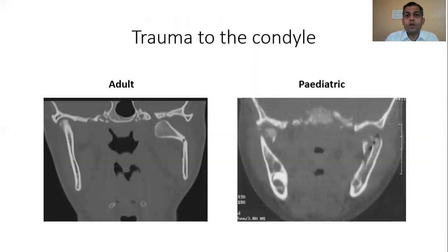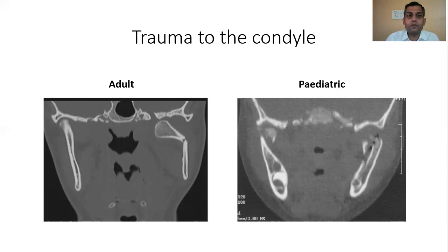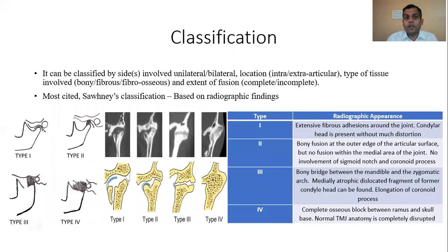As depicted in Rowe and Williams' Maxillofacial Injuries, in a child aged 2 to 5 there is thin cortex and the periosteum is in an active osteogenic phase. Following trauma there is intracapsular hemarthrosis and a comminuted fracture of the well-vascularized bone with multiple fragments, which may lead to temporomandibular joint ankylosis. In adult condylar fractures, the neck fractures to prevent force transmission to the skull base, whereas in pediatric condyles the anatomy results in a shattered mushroom-like fracture in a hemarthrotic environment, predisposing to ankylosis.